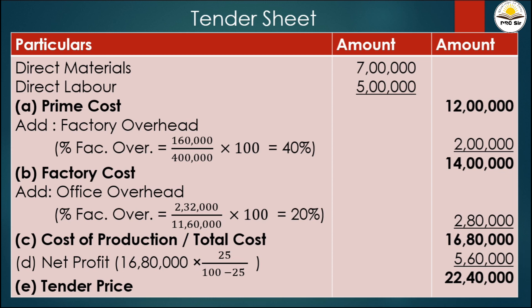Net profit equals 16 lakh 80 thousand times 25 divided by 100 minus 25, which equals 5 lakh 60 thousand. Net profit is 5 lakh 60 thousand. Total cost 16 lakh 80 thousand plus net profit 5 lakh 60 thousand equals 22 lakh 40 thousand.